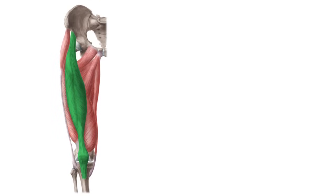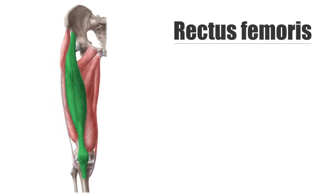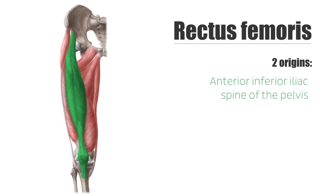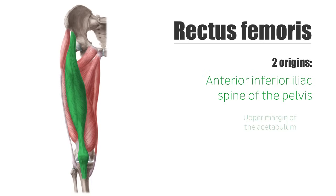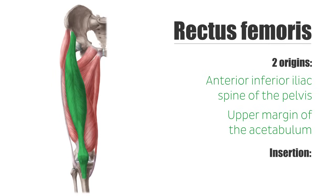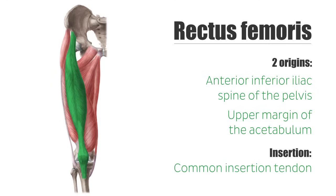The rectus femoris muscle has two origins at the anterior inferior iliac spine of the pelvis and the upper margin of the acetabulum. Distally, its fibers end in the common insertion tendon, which is also known as the quadriceps tendon.